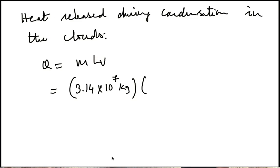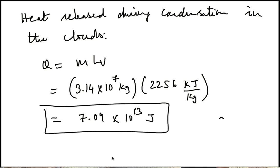And the latent heat of vaporization of water is 2256 kilojoules per kg. So this works out to 7.49 times 10 to the 13 Joules. That's roughly 10 to the 14 Joules.